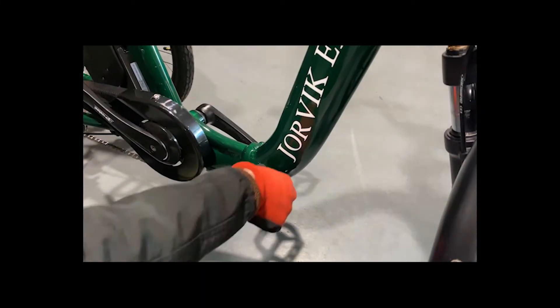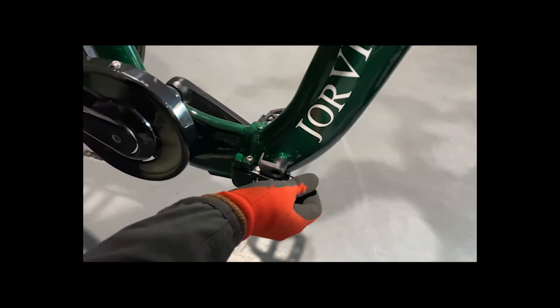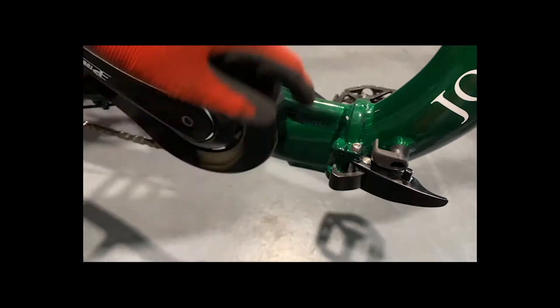To fold the Jetty, first undo the safety clip holding the clamp. Pull it towards you and you'll disengage the hook. Make sure that's not touching.